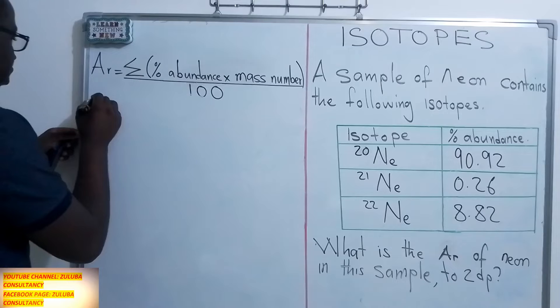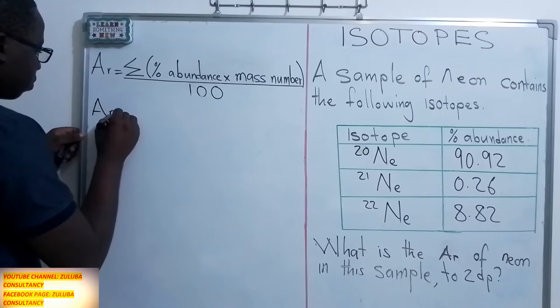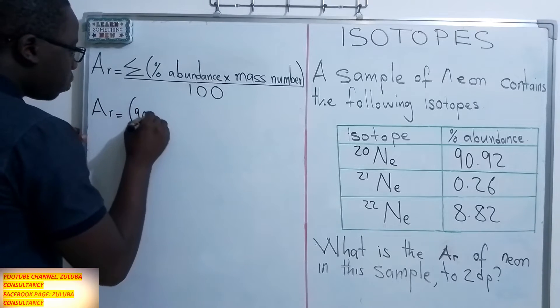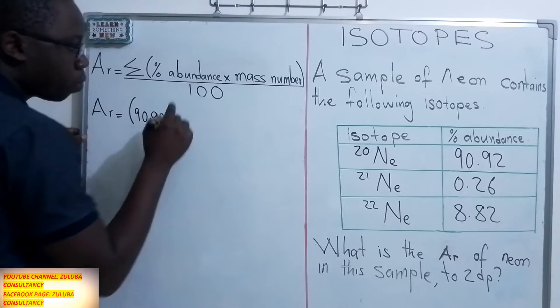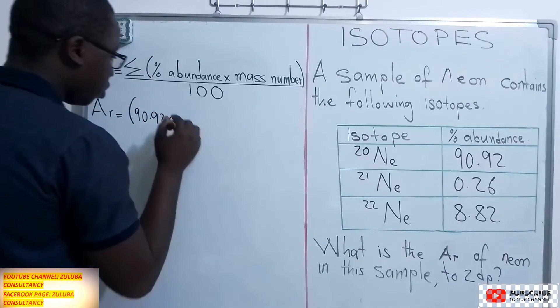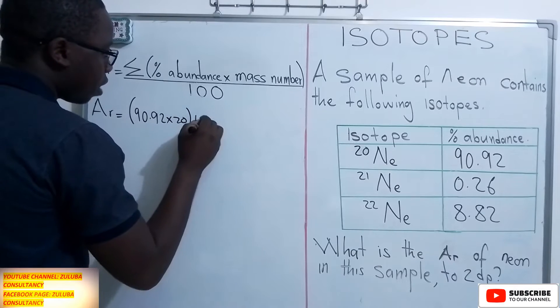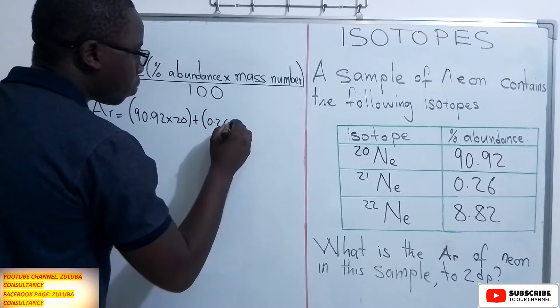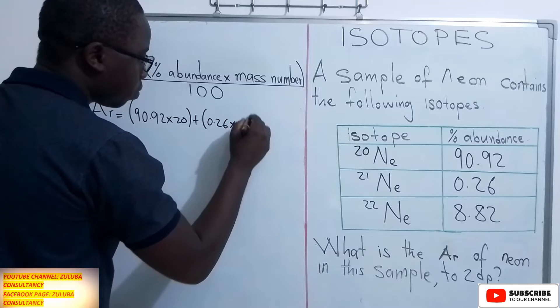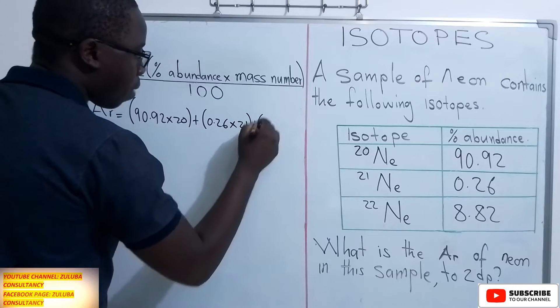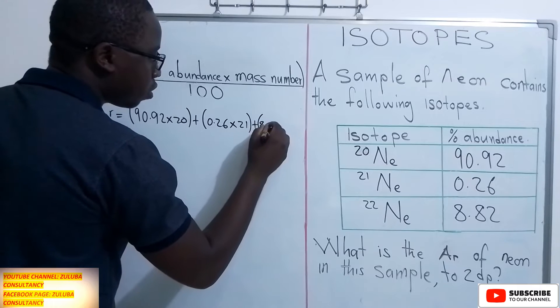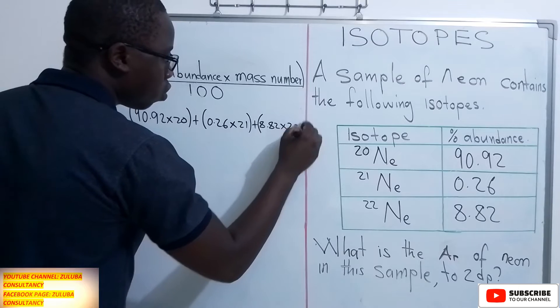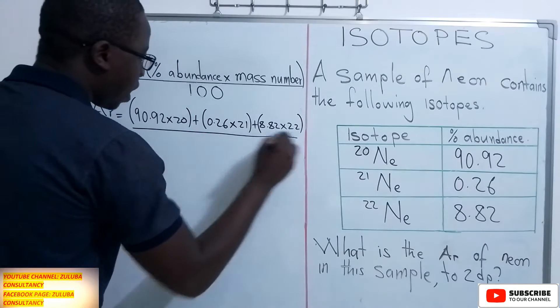So let's see what is the sum of the numerator there. So the first one, we have the abundance of 90.92. We are multiplying this with the mass number which is here, which is 20. Then plus the second one, the abundance is 0.26 multiplied by the mass number which is 21. And the third one, the abundance is 8.82 multiplied by 22. All these should be divided by 100.